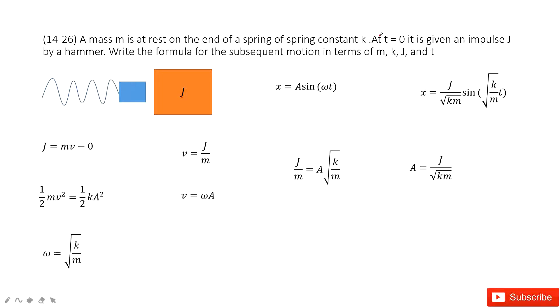We need to write the formula for the subsequent motion. First, we look at this process: the hammer gives impulse, making the mass get velocity v and start oscillations. The impulse J equals the change of momentum. The final momentum is mv. Initial momentum is zero because it's stationary. Then we can get v equals J over m.